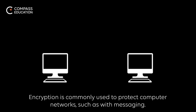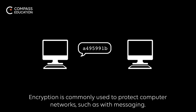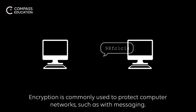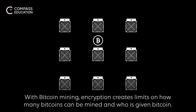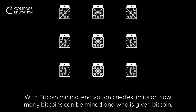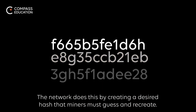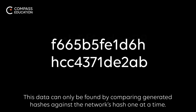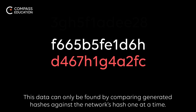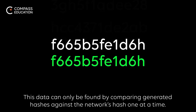Encryption is commonly used to protect computer networks, such as with messaging. With Bitcoin mining, encryption creates limits on how many Bitcoins can be mined and who is given Bitcoin. The network does this by creating a desired hash that miners must guess and recreate. This data can only be found by comparing generated hashes against the network's hash one at a time.